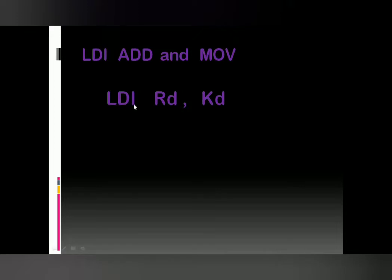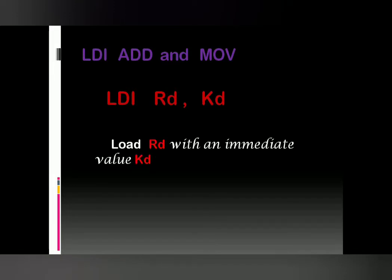First, we will study about the main three instructions. The first is LDI. The syntax of LDI is: LDI Rd, K. In this instruction, 'load immediate' loads register Rd with a value K. K is the name of the immediate data, and Rd is the destination register. So this instruction means: load the register Rd with an immediate data value K.